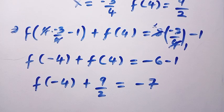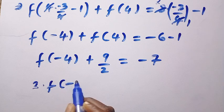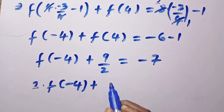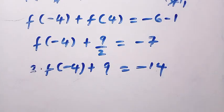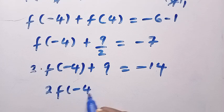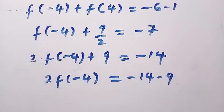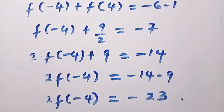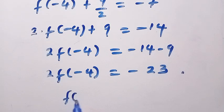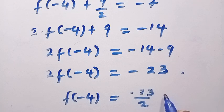Since f of minus 4 and f of 4 are different, we replace f of 4 with 9 over 2 to get f of minus 4 plus 9 over 2 equals minus 7. Multiplying through by 2: 2 times f of minus 4 plus 9 equals minus 14. So 2 times f of minus 4 equals minus 14 minus 9, which is minus 23. Dividing both sides by 2, we get f of minus 4 equals minus 23 divided by 2.